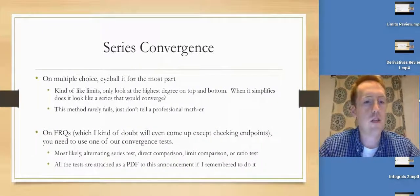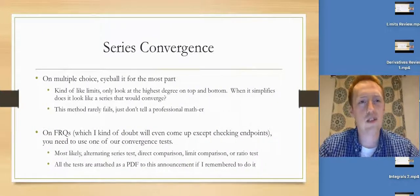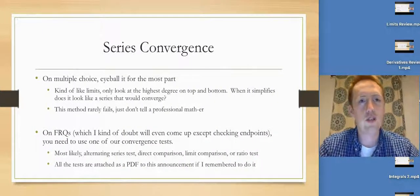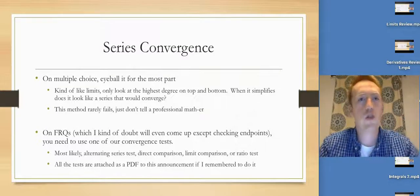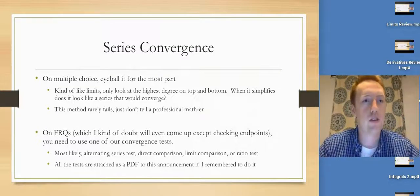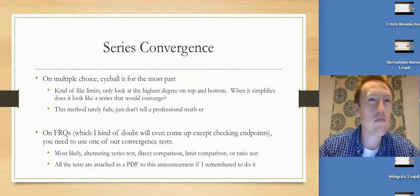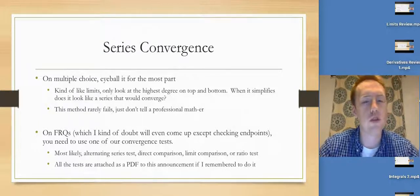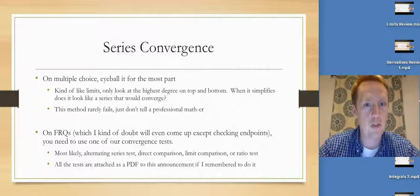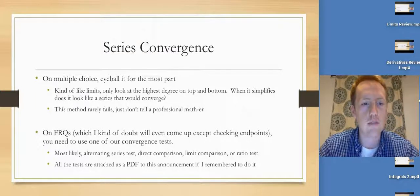First thing: series convergence. On multiple choice, you're basically just going to eyeball it. Just like you do limits, you're going to ignore all of the terms except the highest degree and see, does that look like a series that would converge once you've done the simplification? Just don't tell anyone who knows more math than me, because they might get upset you're not doing it rigorously.